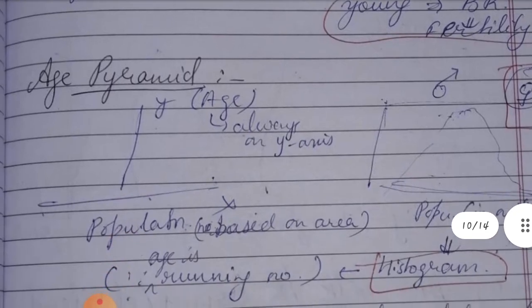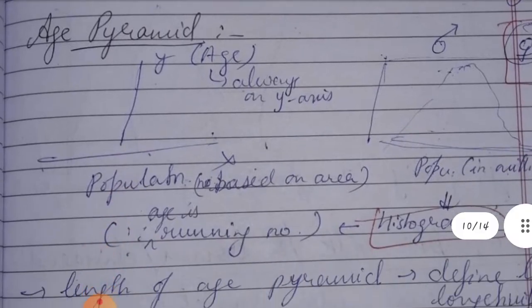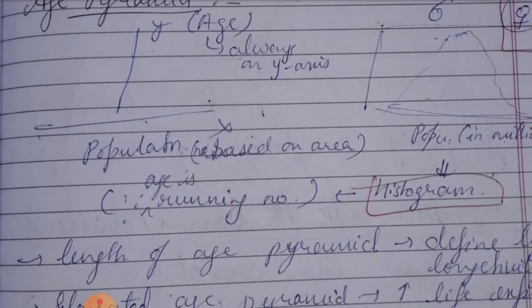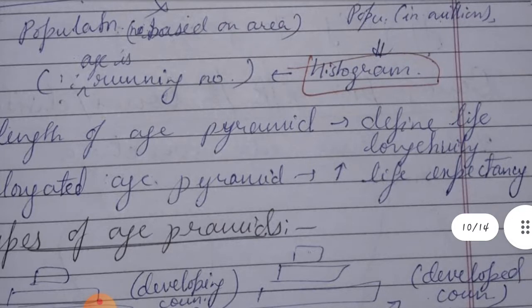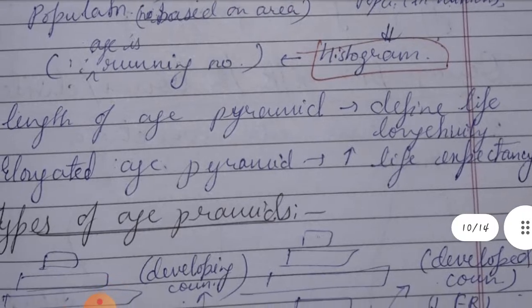The Age Pyramid represents age vertically on the Y-axis, and population on the X-axis in millions. Male and female populations are represented on either side. It is a histogram-type chart because age is a running number.